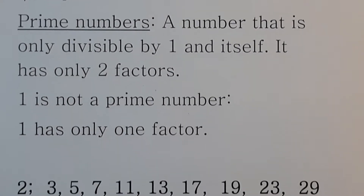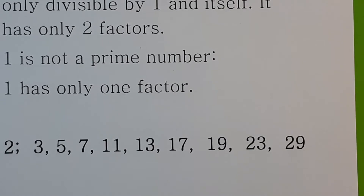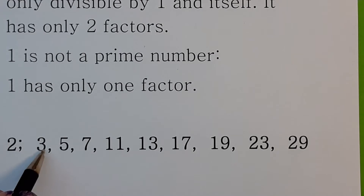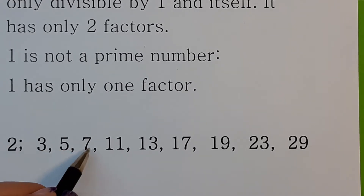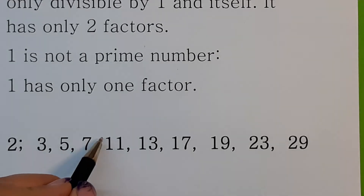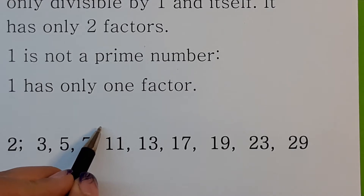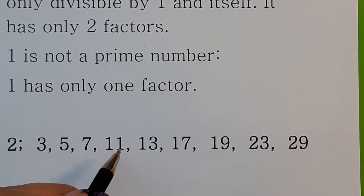Here are examples of the first few prime numbers. Two is your only even prime number, and then you have three, five, seven. But be careful of nine — it's divisible by three, so it's a composite number.